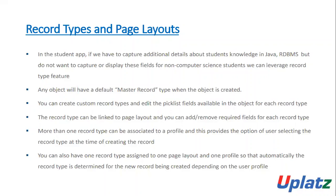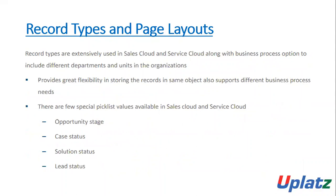You can create custom record types and edit the picklist field values available in the object for each record type. The record type can be linked to a page layout, and you can add or remove required fields for such record type. More than one record type can be associated to a profile, and this provides the option of users selecting the record type at the time of creating the record. You can also have one record type assigned to one page layout and one profile, so that the record type is automatically determined for new records based on the user profile.